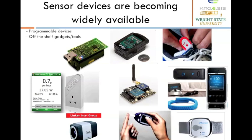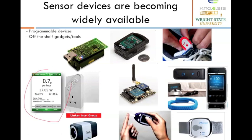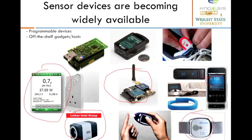Sensor devices are becoming affordable and range from environmental sensors to physiological sensors. For example, there are sensors that can monitor our environment, such as sensors that monitor power consumption, and sensors to monitor various activities in the environment. There are also sensors monitoring the physiology of a person, such as sensors to monitor heart rate and sleep. So there are a wide variety of sensors that can monitor our environment as well as the physiology of people.